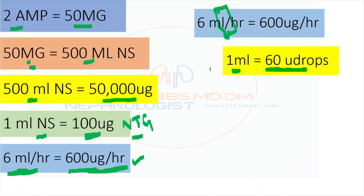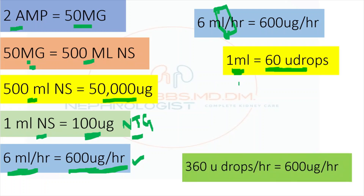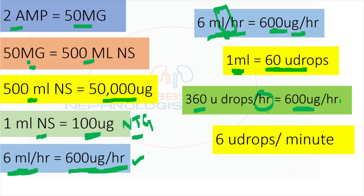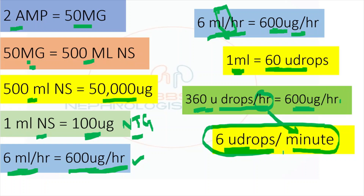If a micro-drip set is not available, use the larger drop set where 6 large drops equal 1 ml. Using the micro-drip set, 360 micro-drops per hour equals 6 micro-drops per minute — this is the rate at which you set the micro-drip set. Since this dose is approximate, you can also start at 10 micro-drops per minute if needed.